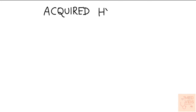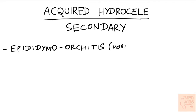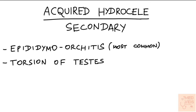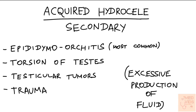Now let's see about secondary acquired hydrocele. Secondary acquired hydrocele is due to secondary causes like epididymo-orchitis, which is the most common cause, torsion of testis, testicular tumors, and traumatic testis. Here the pathology is excessive production of fluid inside the tunica vaginalis. Remember that the most common cause of secondary acquired hydrocele is epididymo-orchitis, and secondary acquired hydrocele also leads to vaginal hydrocele.